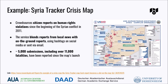Crowd mapping first came to international attention through its successful use in the global disaster relief movement. One example is the Syria Tracker Crisis Map, used to crowdsource citizen reports on human rights violations since the beginning of the Syrian conflict in 2011. The map provides detailed metrics on fatalities while preserving the name, location, and details of each victim. The service blends local news reports with on-the-ground reports using hashtags and social media or sent via email. Nearly 5,000 submissions, including over 11,000 fatalities, have been reported since the map's launch, with collected data being used by both development agencies and media to report on local events.